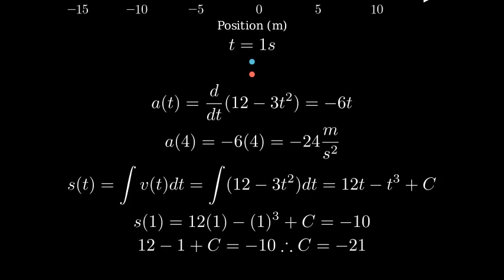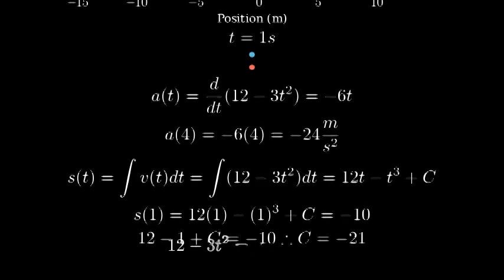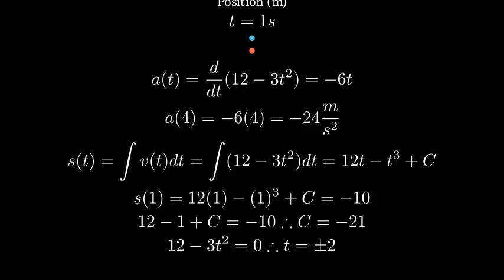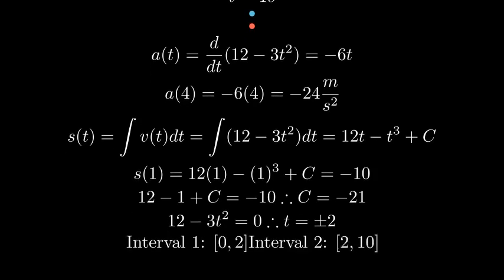To find the total distance traveled, we need to consider when the particle changes direction. The particle changes direction when velocity is zero. Setting 12 minus 3t squared equal to zero, we get t equals plus or minus 2 seconds. Since we're only considering positive time, the particle changes direction at t equals 2 seconds.